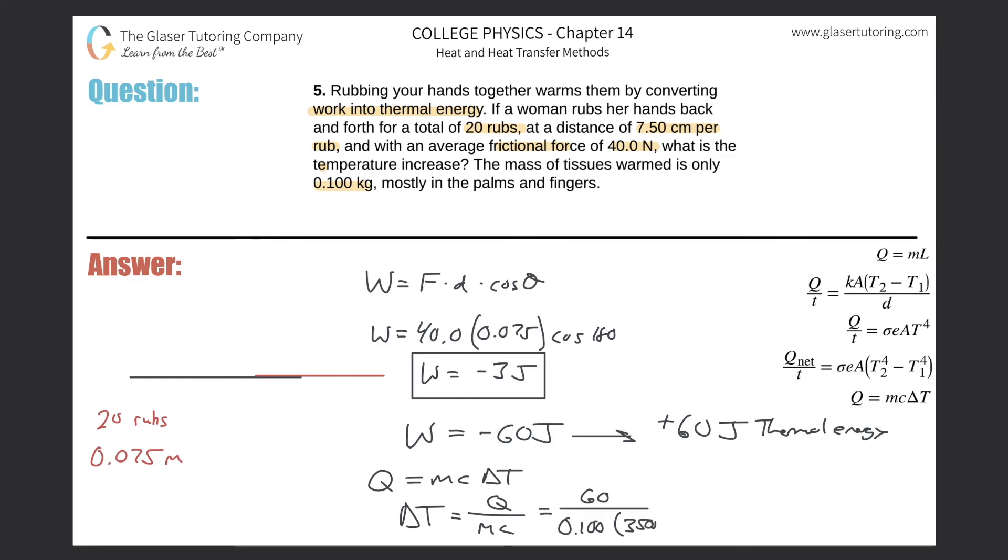Now we're going to just solve. This is going to be 60 divided by 0.1 times 3500, and this works out to be just a small little change in temperature of 0.171.